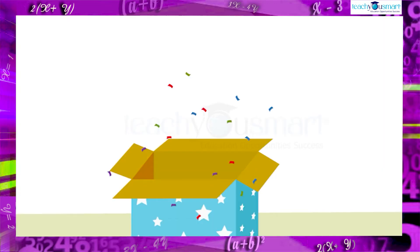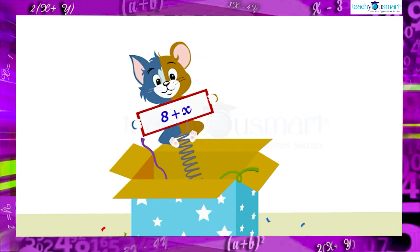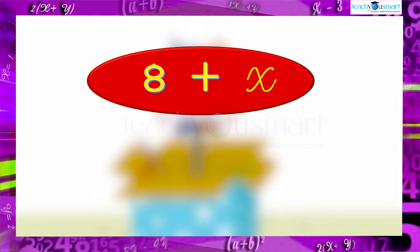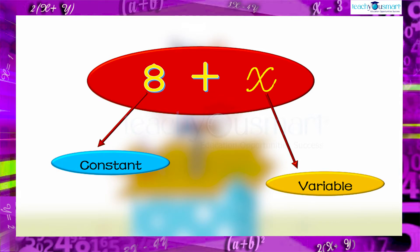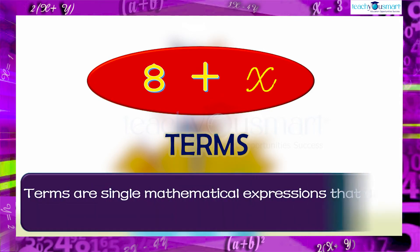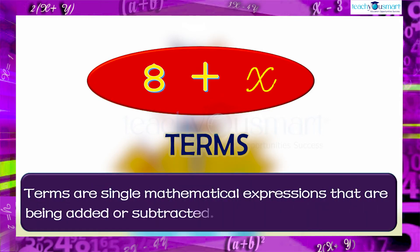Let's take the expression 8 plus x. Here is a number 8 called a constant and a variable x that are connected by the mathematical operator plus. So 8 and x are called the terms of the given expression. That is, terms are single mathematical expressions that are being added or subtracted.